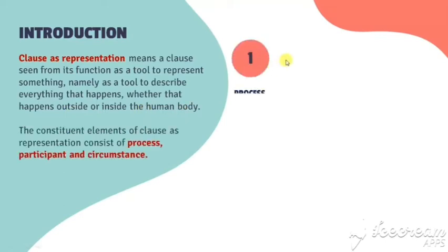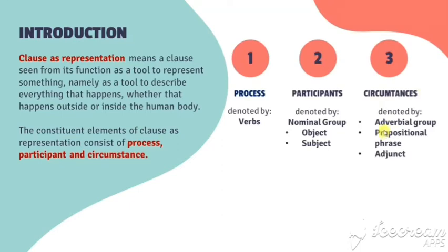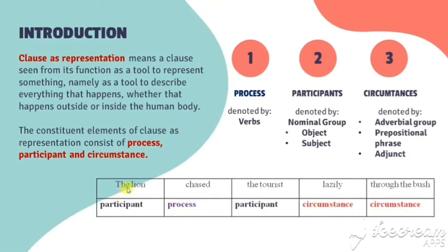Clause as representation consists of process, denoted by verbs; participant, denoted by nominal group whether it is object or subject; and circumstance, denoted by adverbial group, prepositional phrase. For example: 'The lion kissed the tourist lazily through the bush.' The lion is the participant, kissed is the verb included in process, the tourist is the participant (recipient), and lazily through the bush is the circumstance.